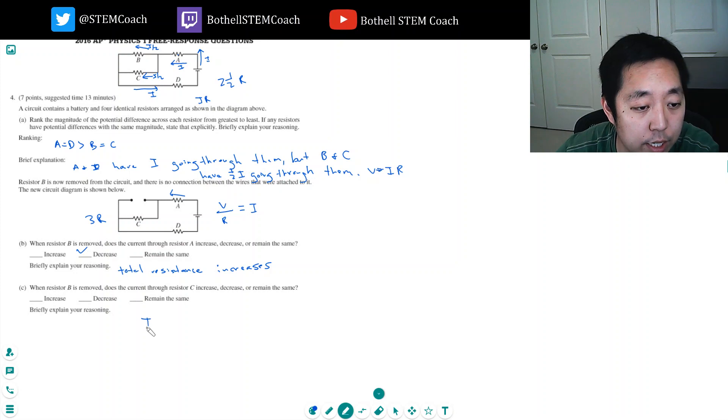So now that I solved the resistance, the current through C in the second case is I is equal to V over 3R. In the first case, the current would have been one, like the total current would have been V over five halves R, but C only got one half of that.